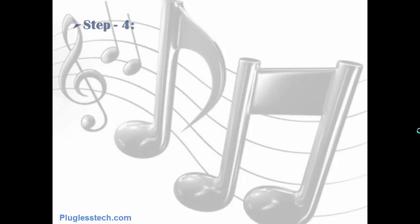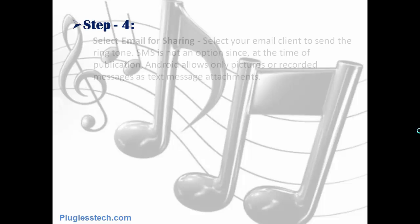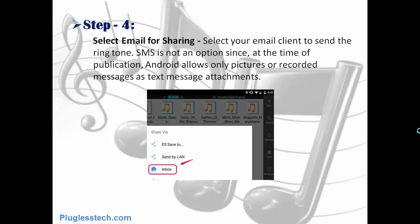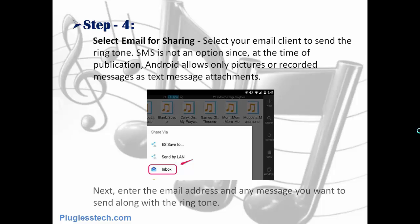Step 4: Select email for sharing. Select your email client to send the ringtone. SMS is not an option since Android allows only pictures or recorded messages as text message attachments. Next, enter the email address and any message you want to send along with the ringtone.